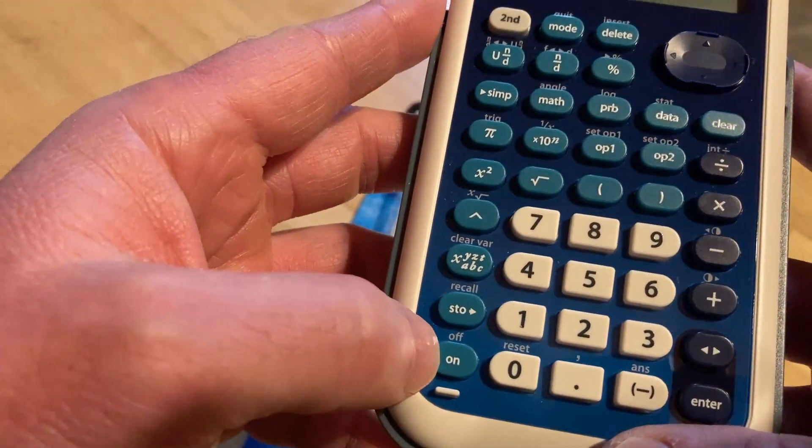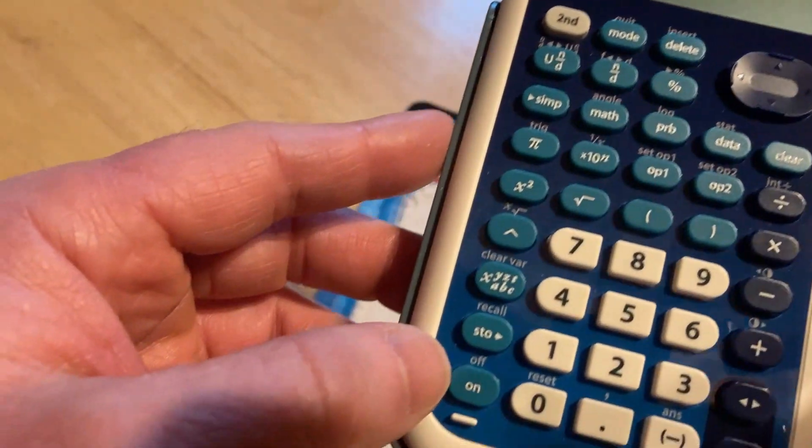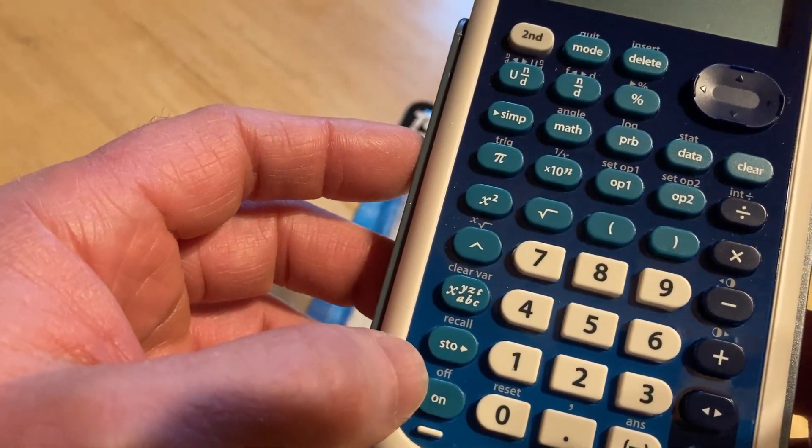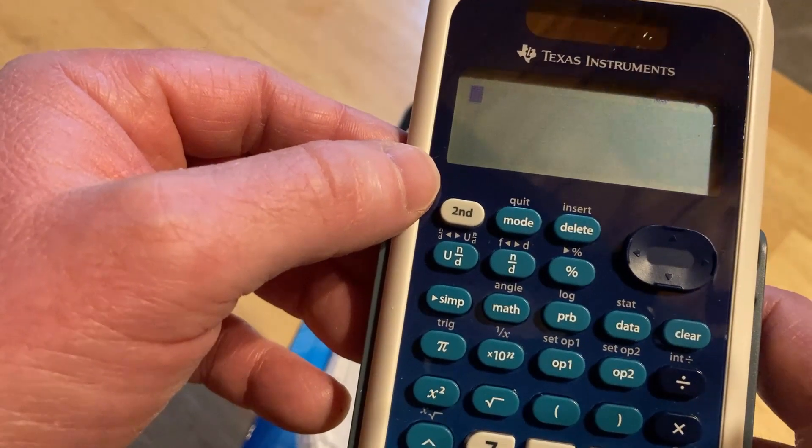Right now I'm going to turn it on, so you press ON. By the way, to turn it off, you see how it says OFF above the ON but it's a different color? You have to press the second key and then press OFF, and it turns off. Okay, so then ON.